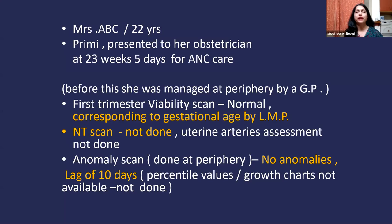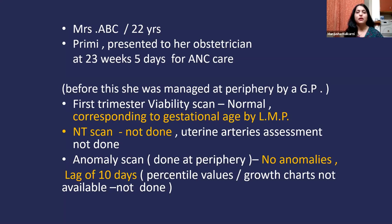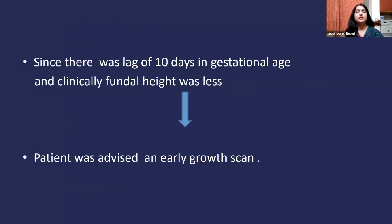NT scan was not done. Uterine arteries assessment was not done. The anomaly scan, done at the periphery, said there were no anomalies, but it mentioned a lag of 10 days. The percentile values and growth charts were not given and not done.